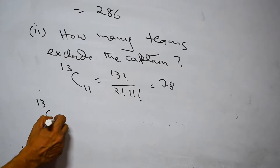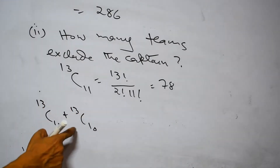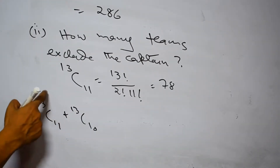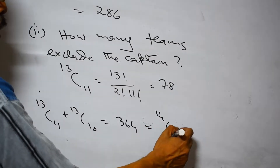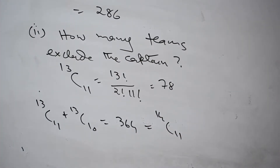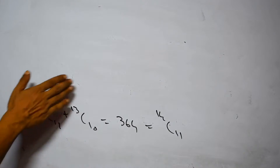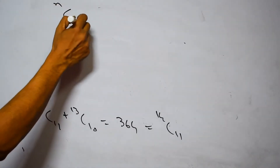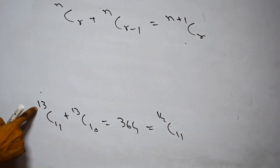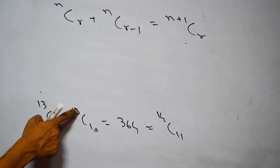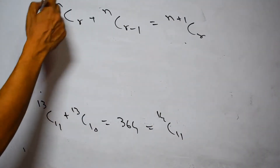An interesting observation: if we add the two results — 13C10 (captain always present, 286) and 13C11 (captain never present, 78) — we get 364, which equals 14C11, the total selections. This leads to the important identity: NCR plus NC(R-1) equals N+1 CR. Here, 13C11 plus 13C10 equals 14C11, confirming the formula.